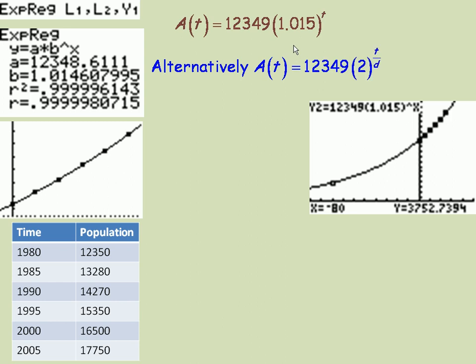Now, alternatively, another exponential model we could use, and this is similar to half-life, would be the 12,349, the original population, times 2 to the power of the time over the doubling period. Remember, half-life, that was the half-life. And so this is actually going to give us a very similar type equation to this one here.